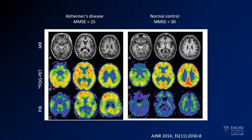Here is a comparison between FDG PET and Pittsburgh Compound B from AJNR. On FDG PET you see decreased activity in the temporal and parietal lobes, and those same areas are elevated on Pittsburgh Compound B. A normal control does not show those areas, supporting the notion that indirect amyloid imaging agents would be more specific.